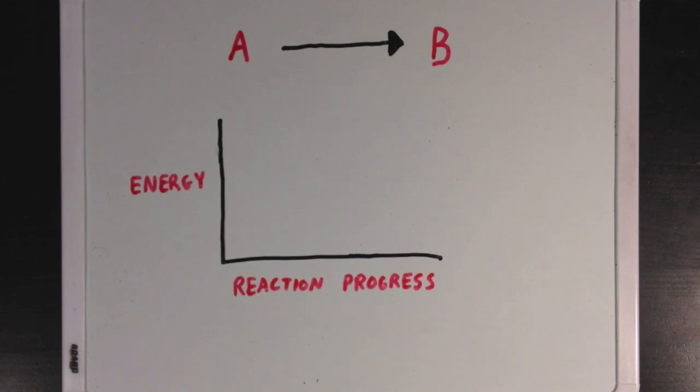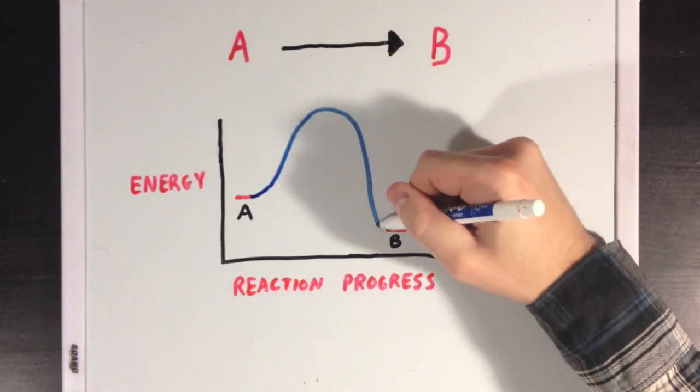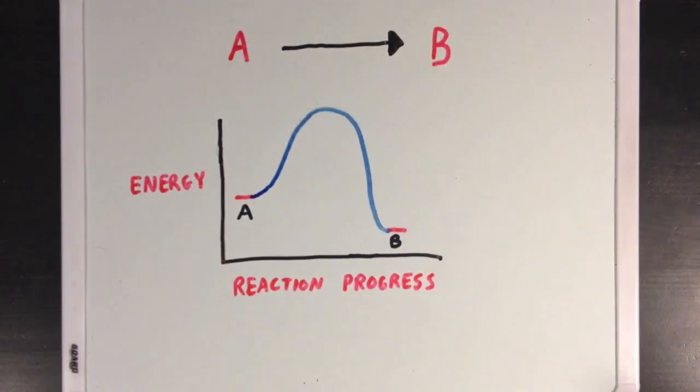And here, we'll plot the energy state of our molecules against the progress of the reaction. So essentially, using this graph, we'll follow the energy level of molecule A as it's converted to molecule B. Remember, the molecule's energy level is related to its stability. And something that has a lower energy state is more stable, and for something to transform to a more unstable form, it needs an input of energy to get there.